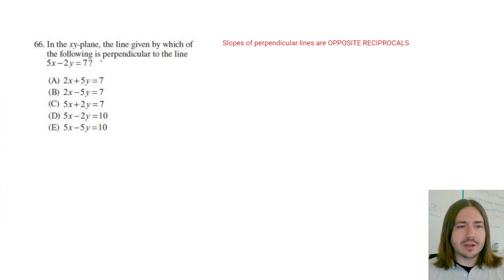So let's find the slope of the original equation. To find that slope, what we want to do here is we want to rearrange the equation. Right now it's 5x minus 2y equals 7. And we want to try to rearrange it into what is called slope-intercept form.